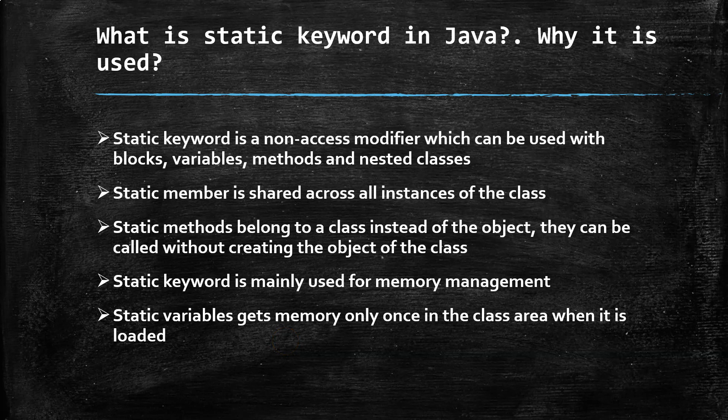Static keyword is mainly used for memory management. Static variables get memory only once in the class area when the class is loaded. So Java saves memory because even if variables are called again and again, memory is only allocated once. That is how you answer what the static keyword is in Java and why it is used.